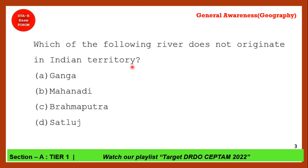Next question: Which of the following rivers does not originate in Indian territory? Ganga originates from Gangotri in Uttarakhand, Mahanadi originates in Chhattisgarh, Satluj also originates from Uttarakhand, and Brahmaputra originates from the Chemayungdung glacier in Tibet, which is in China. So the correct answer is option C — Brahmaputra.